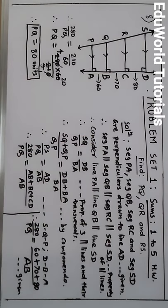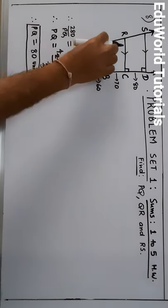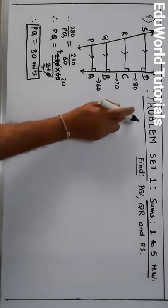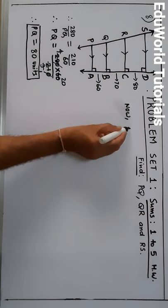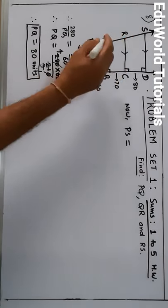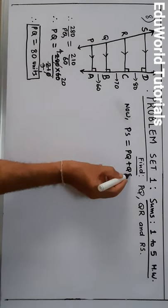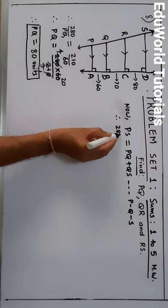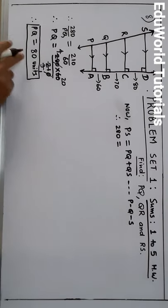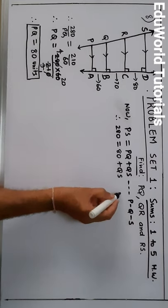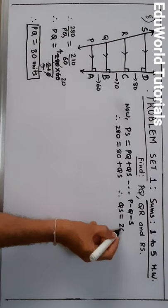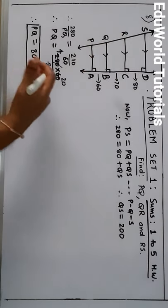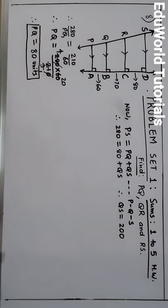Now, PS is sum of PQ and QS. PS is 280, PQ we already got as 80. So 280 equals 80 plus QS. Therefore QS equals 280 minus 80, which is 200. Now as QS is 200 and I know the values of BC and CD, I can apply the same steps as in the previous part.